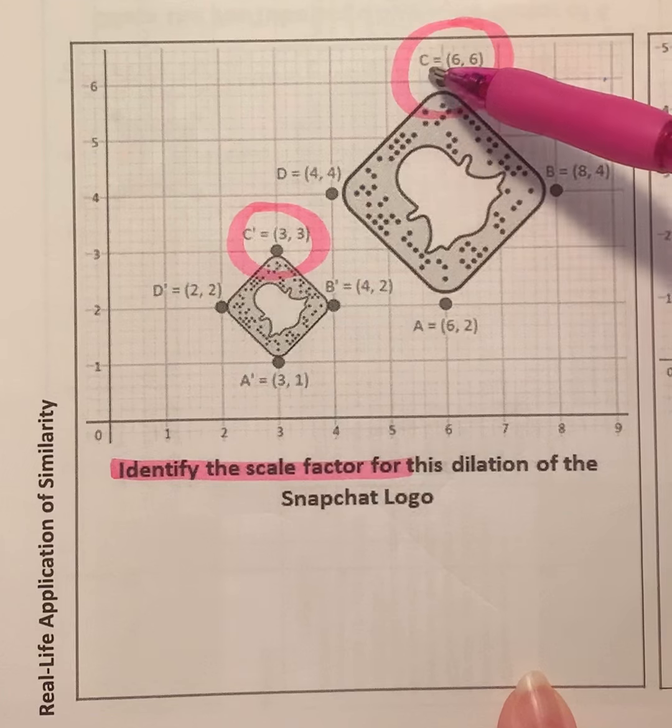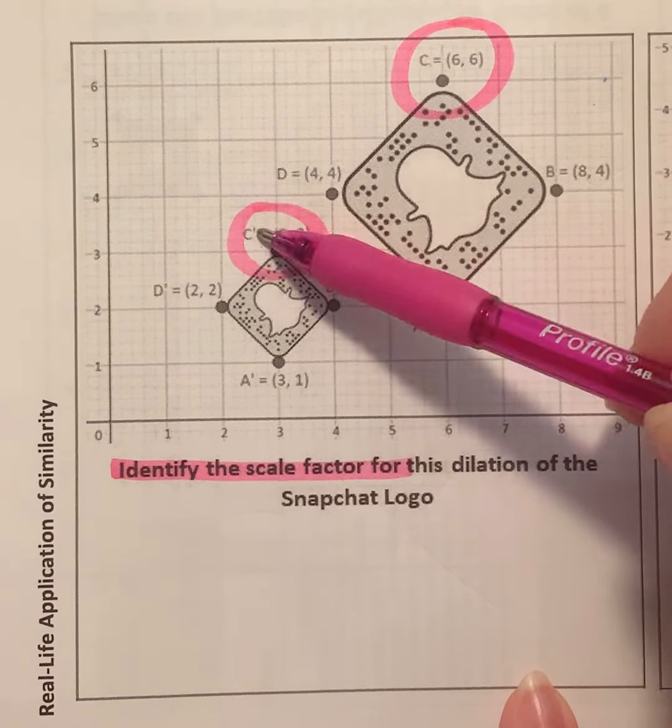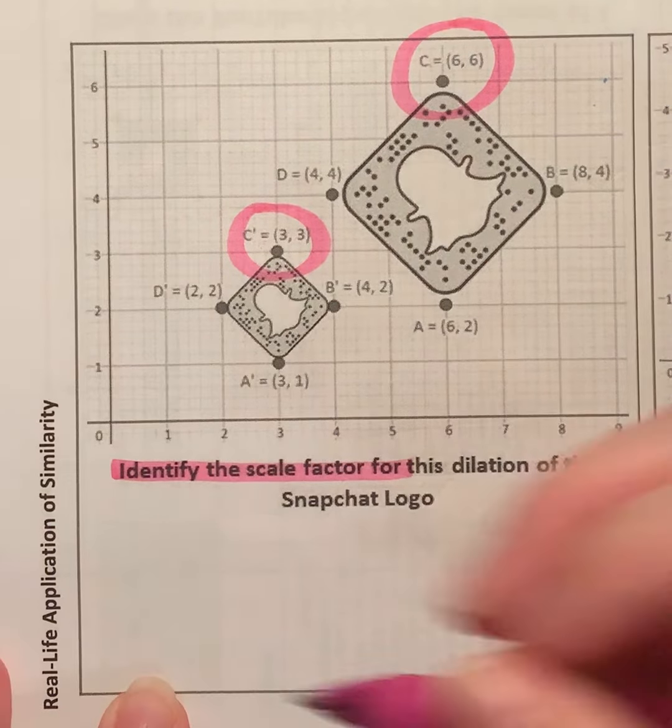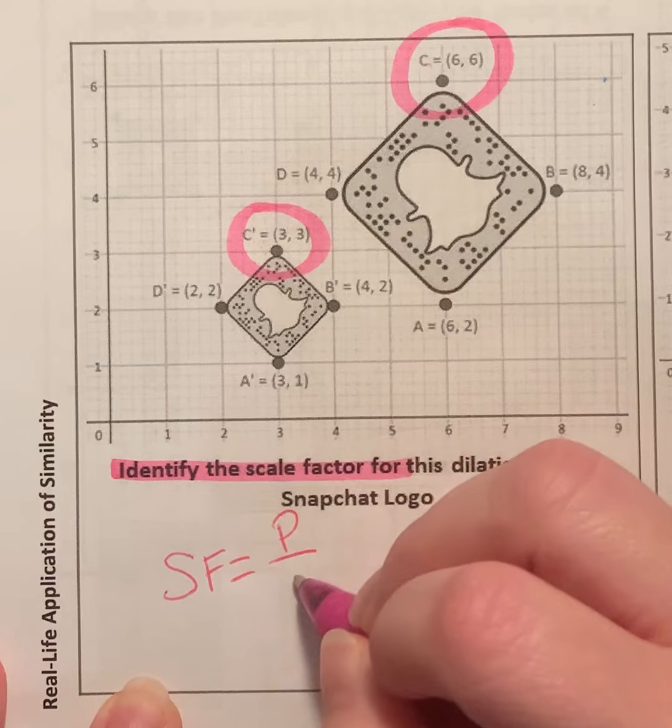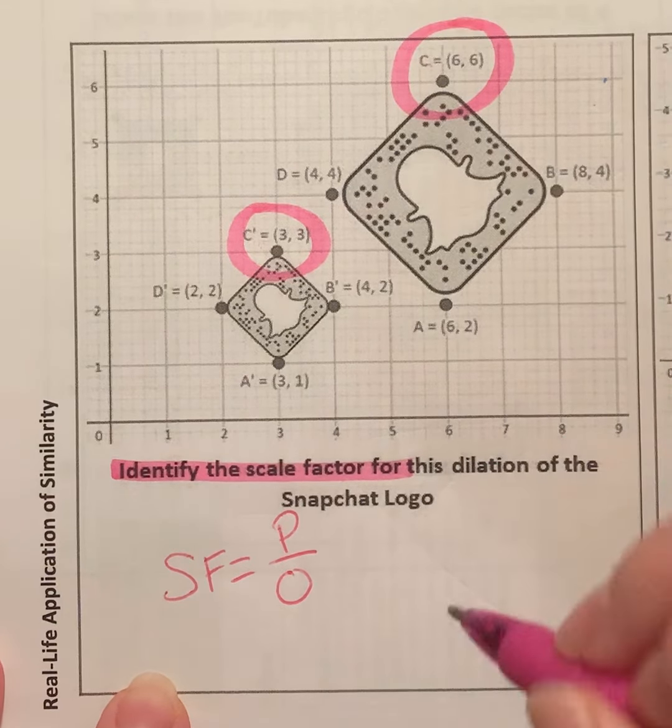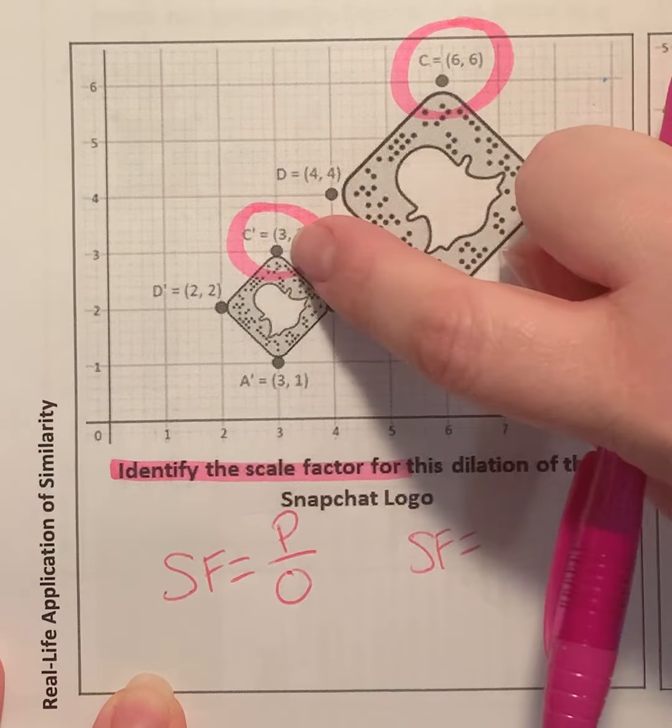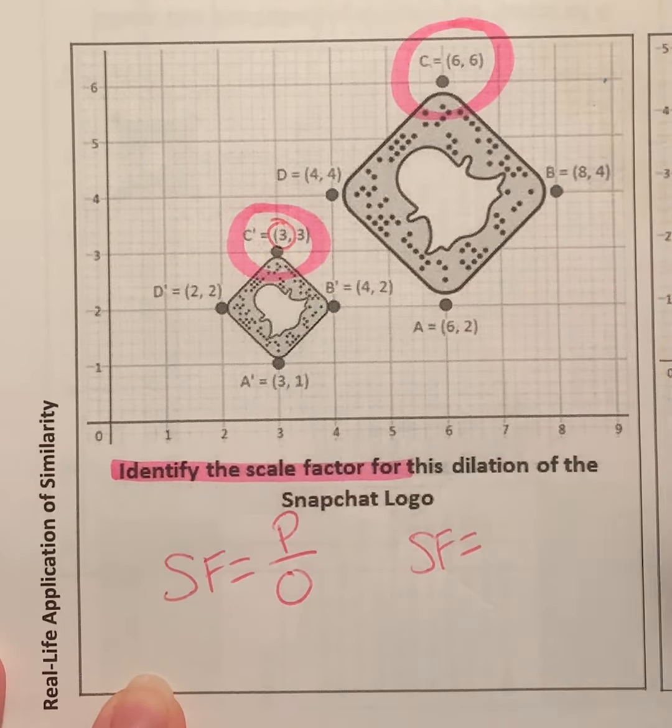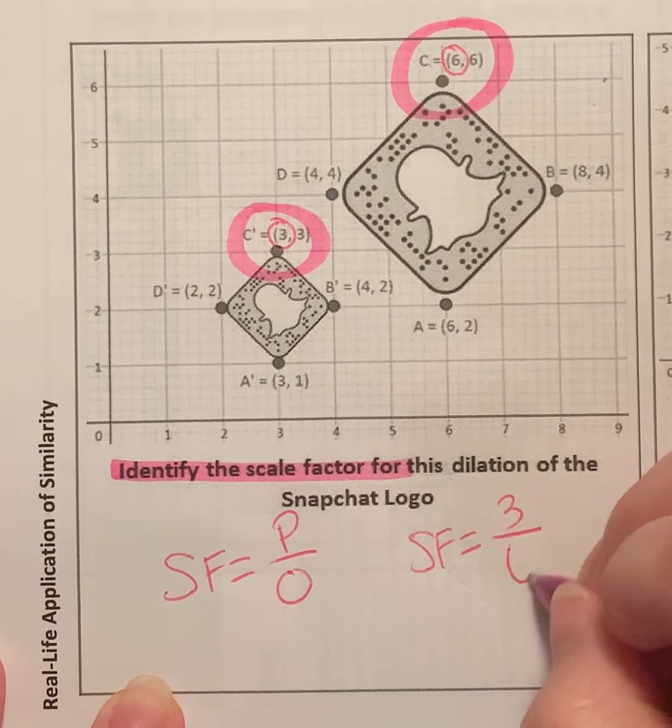Notice that this one is labeled C and this one is labeled C prime. Prime comes second. So to find scale factor, we're going to put the prime value over the original value. So scale factor equals the prime value of three over the original value of six.